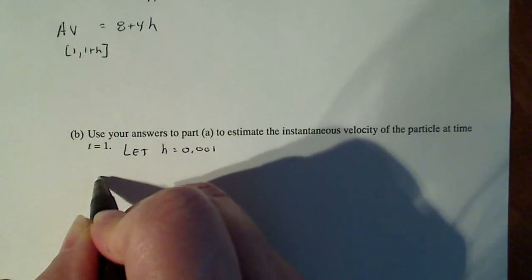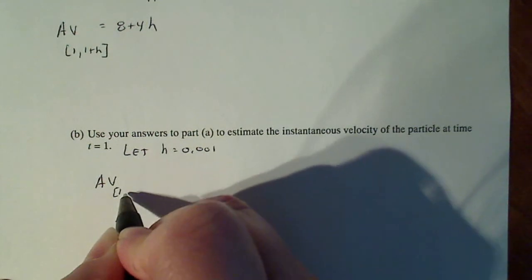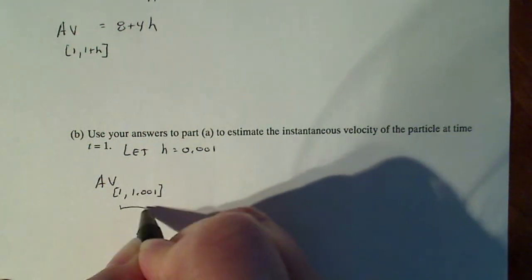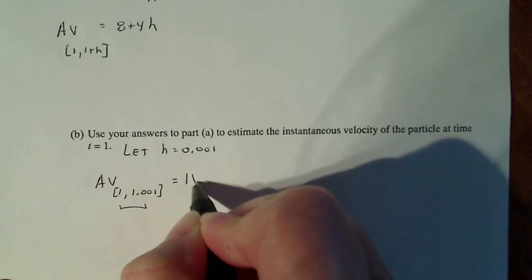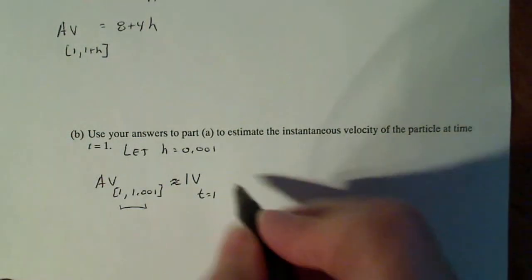then I have my average velocity is going to be between 1 and 1.001, where this is sufficiently close enough to write it as approximately equal to the instantaneous velocity at t equal 1.